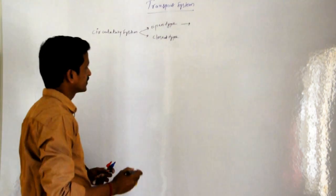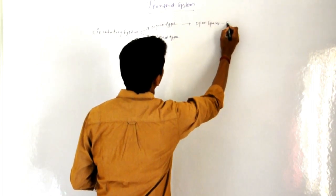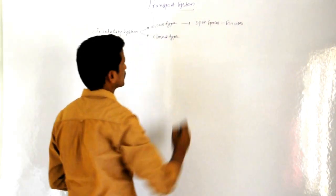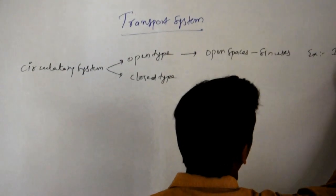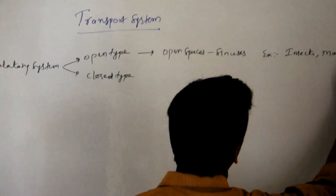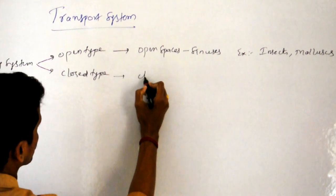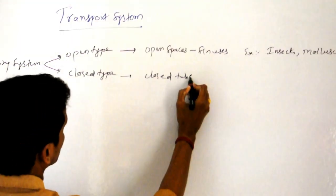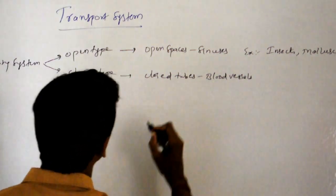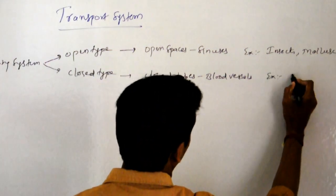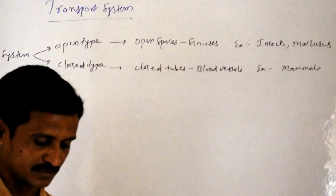If blood is pumped into open spaces called sinuses, it is called open type of circulatory system. This is seen in insects and some molluscs. If blood is pumped into closed tubes called blood vessels, then it is called closed type of circulatory system. Most animals possess the closed type, with mammals being the best example.